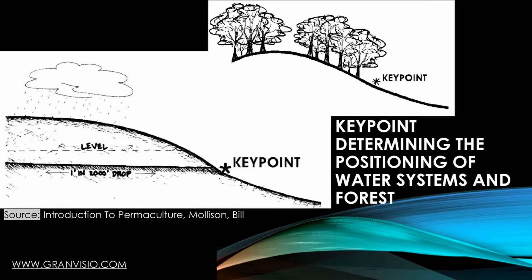Let's move on to some examples of permaculture design in a humid landscape. You may have heard about the key point and its importance in permaculture water systems. In very simplistic terms, it's where contours start to spread and where the hill transitions from convex to concave. Water harvesting systems are often recommended to be carried out below the key point because the areas above it are more erosive. So the key point helps decide where to start collecting water, but also suggests where to consider planting a forest.